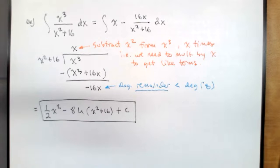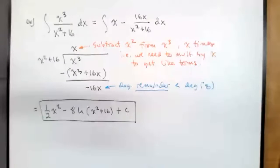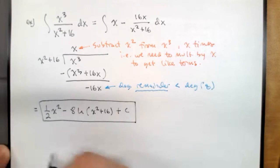When you do long division on a rational function, the degree of the remainder is supposed to end up being less than the degree of the denominator — that's how you know you've arrived at the remainder and can stop subtracting. If you keep going beyond that, you'd find the power series representation, but that's for later.